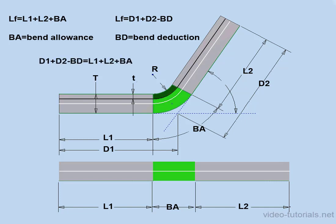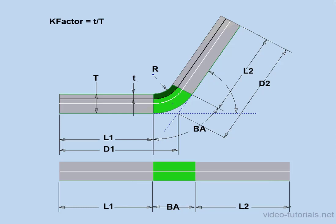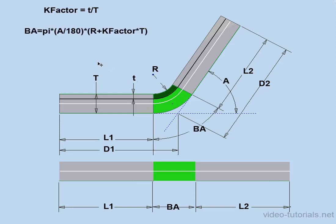There's another method for calculating bend allowance and bend deduction — it uses what's called the k-factor. The general principle goes like this: the neutral axis, shown here in white, is the point where the material inside it will compress and the material outside it will stretch. The neutral axis will be closer to the inside bend. The more the part bends, the closer the neutral axis will lie inside the part. The k-factor is calculated as small t divided by big T, where small t is the offset distance of the neutral axis and big T is the thickness of the material. With these variables, the formula for calculating bend allowance using the k-factor is noted as follows.